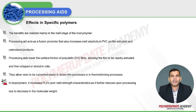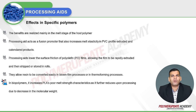In biopolymers, specifically polylactic acid (PLA), it is known to have poor melt strength characteristics which further reduces upon processing, because there is a breakdown of polymer chains when exposed to heat. This leads to further deterioration in melt strength due to a decrease in molecular weight.